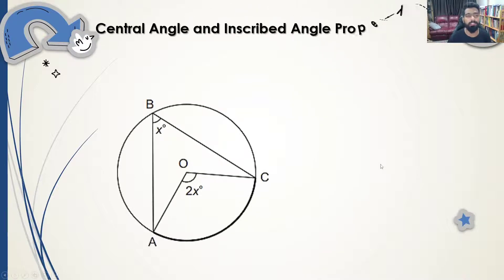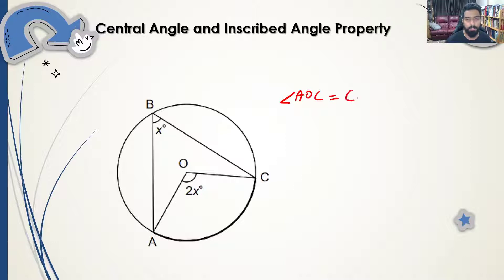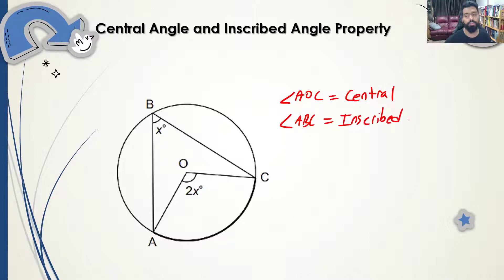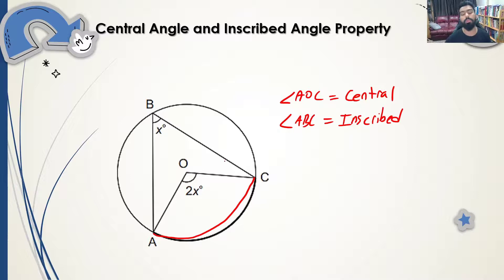Now let's go to the theorem of central and inscribed angles. Here, angle AOC is the central angle and angle ABC is the inscribed angle. Whenever the central angle and inscribed angle share the same arc — in this case arc AC — a key relationship applies.